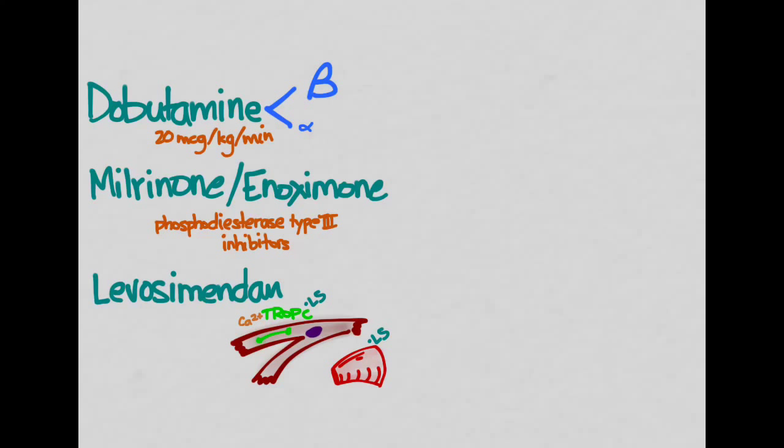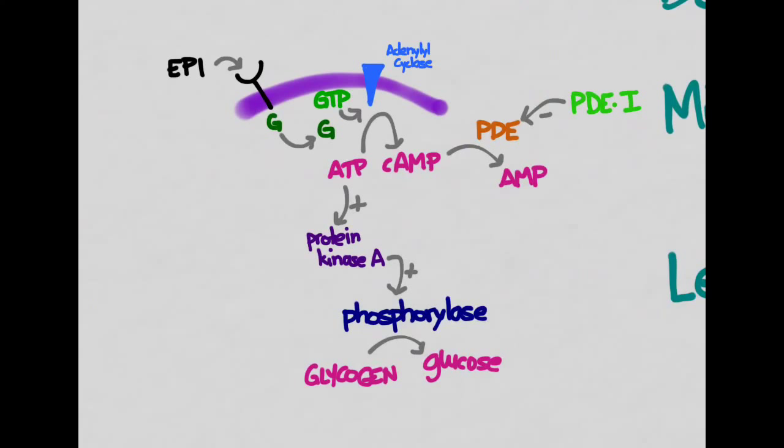There's another drug, another class of drugs. They're the phosphodiesterase type 3 inhibitors, milrinone and inoximone. What these drugs do is they work by a different mechanism to get the heart to pump a little bit more. If you really want to know, I looked it up. Here's how it works.